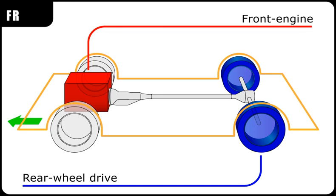Rear-wheel drive layouts: Front-engine, rear-wheel drive. The front-engine, rear-wheel drive layout is one where the engine is located at the front of the vehicle and driven wheels are located at the rear. This was the traditional automobile layout for most of the 20th century, and remains the most common layout for rear-wheel drive cars.